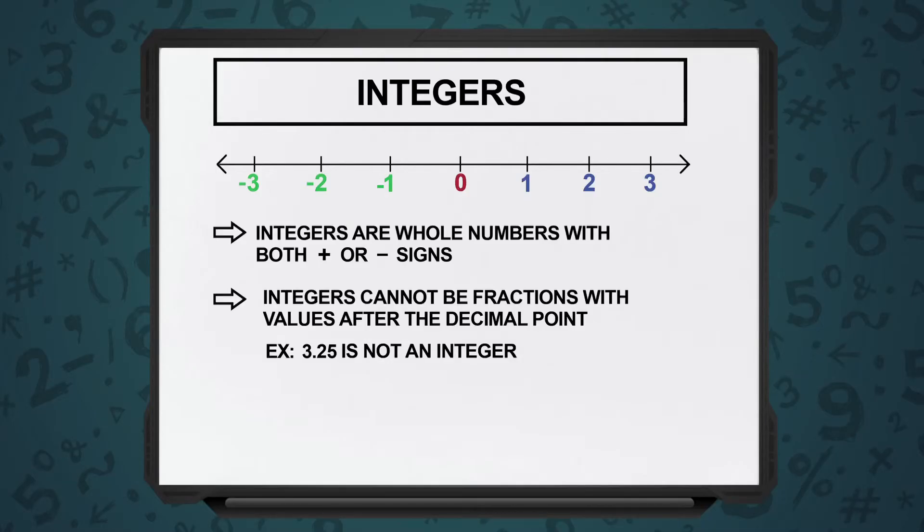No decimal points, and integers can also be negative. So you could have minus 1, minus 2, minus 3, minus 4, so on and so forth.